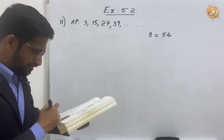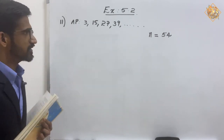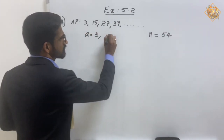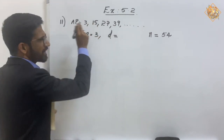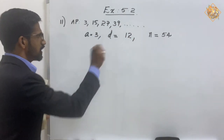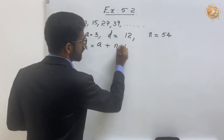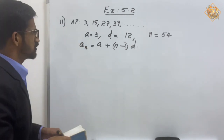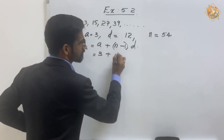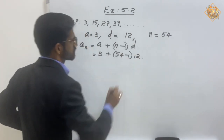We have to find the 54th term of the AP. Here a equals 3, common difference d equals 15 minus 3 which is 12, and n equals 54. Now we apply the formula: an equals a plus (n minus 1) into d, substituting these values.